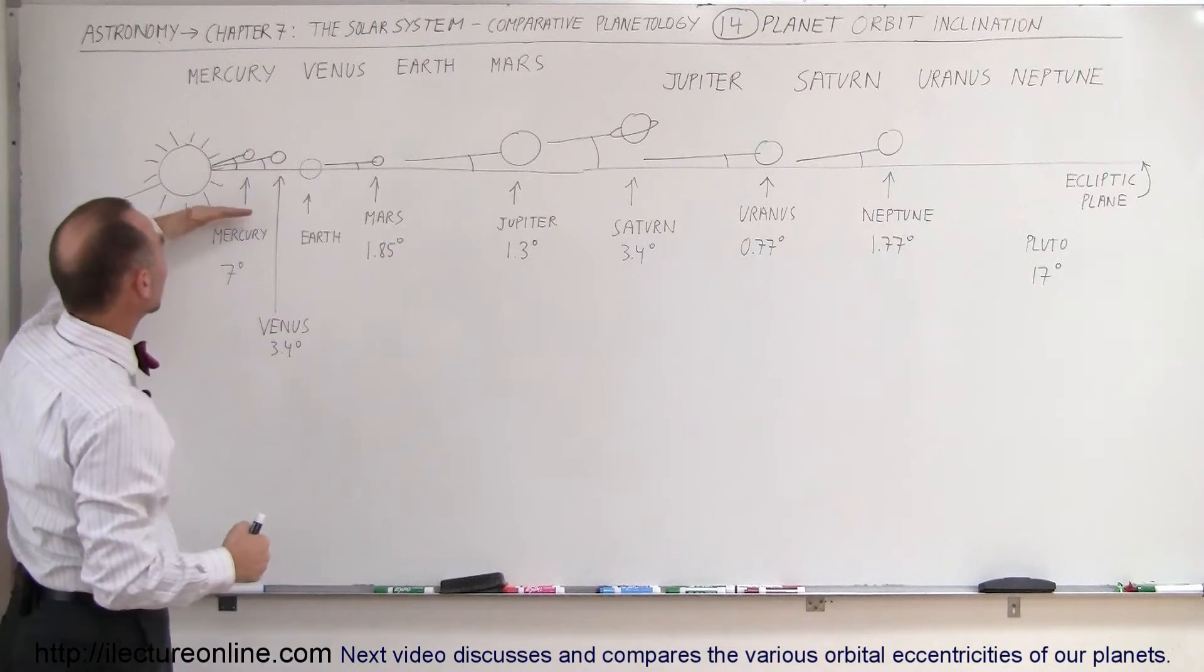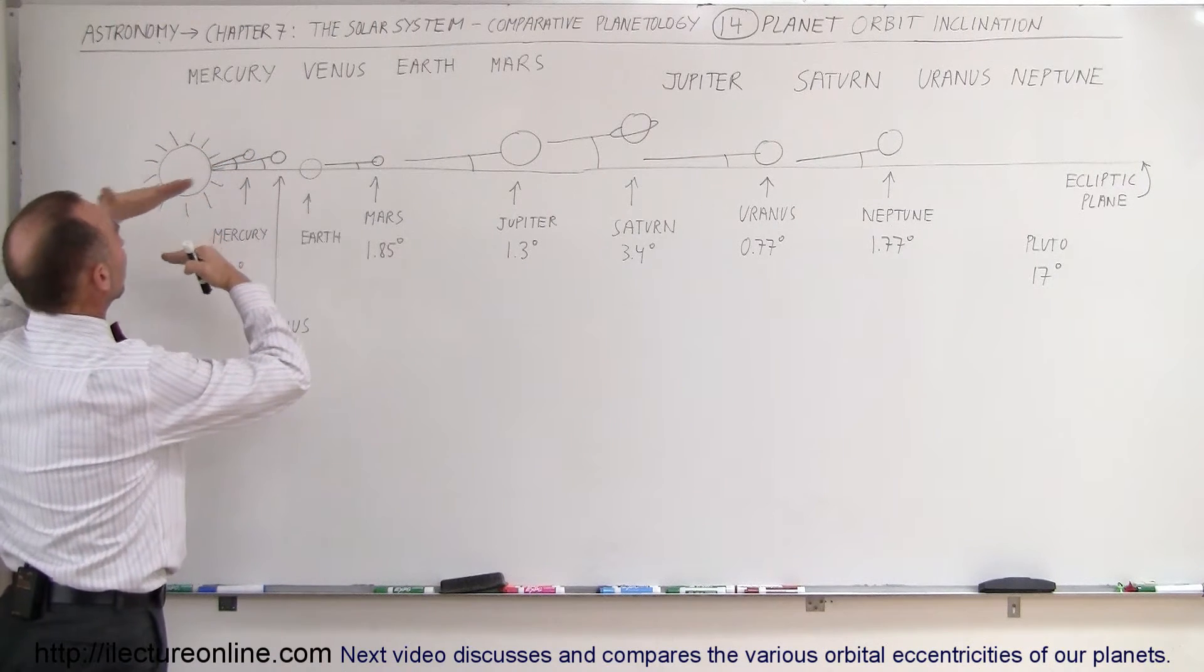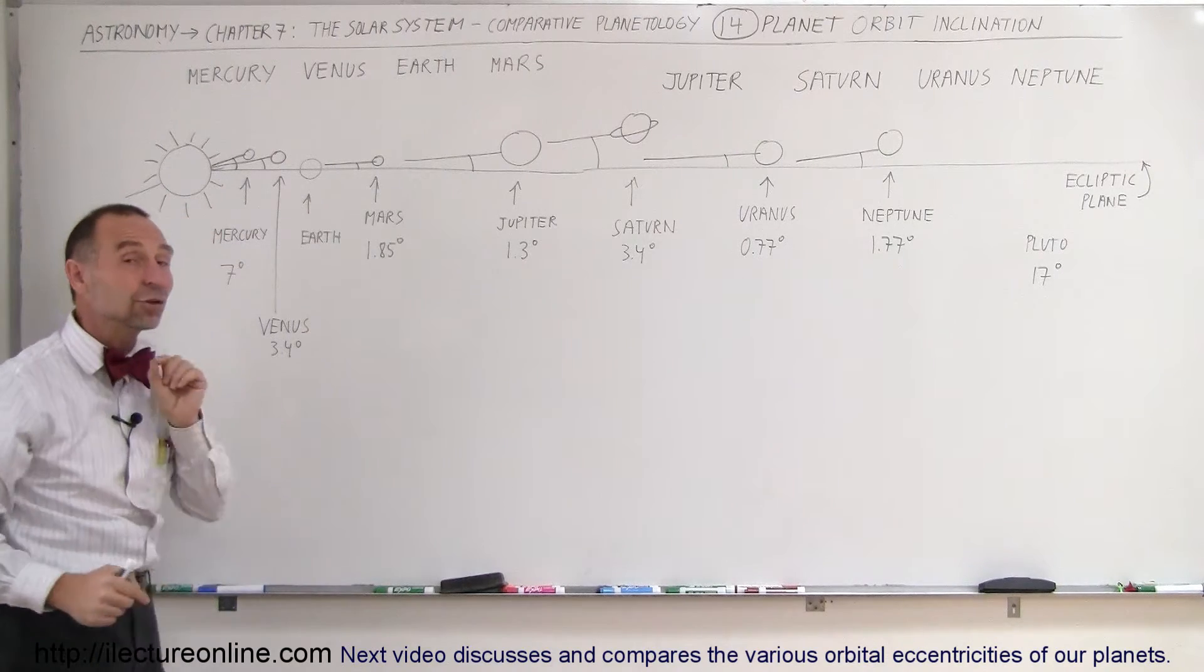So here you can see that Mercury, the orbit of Mercury is kind of like this. And so it makes an angle between the orbit of Mercury and the orbit of the Earth, and the angle is about 7 degrees.